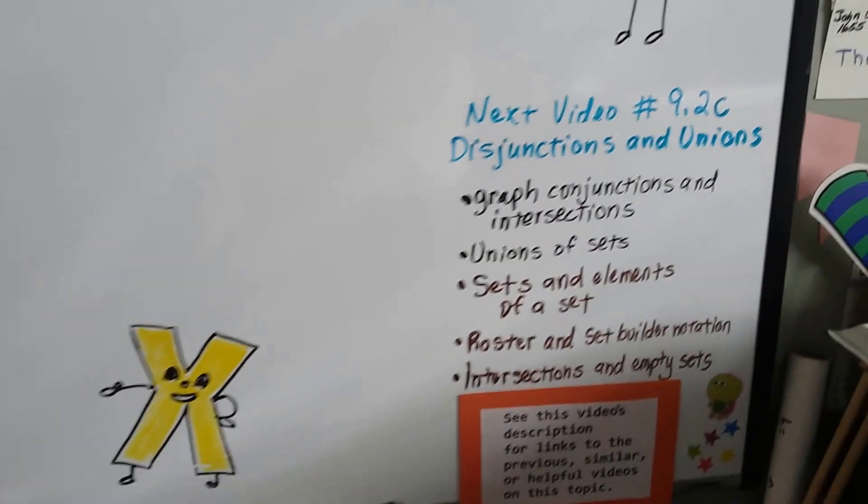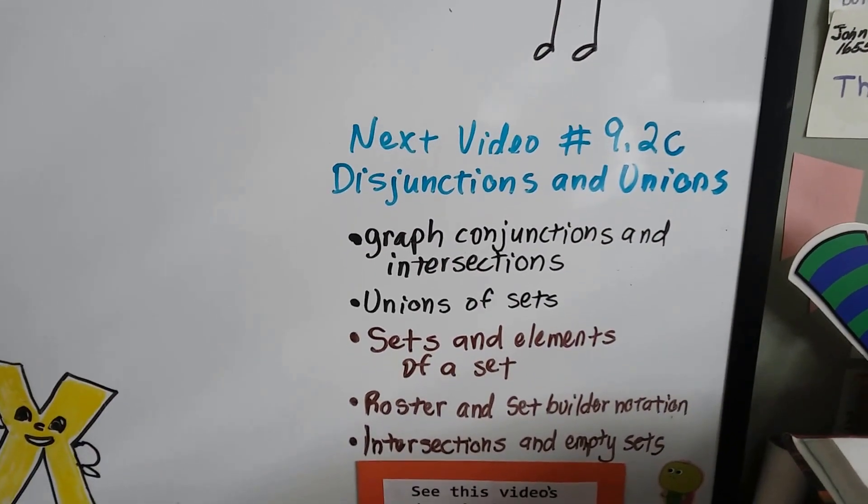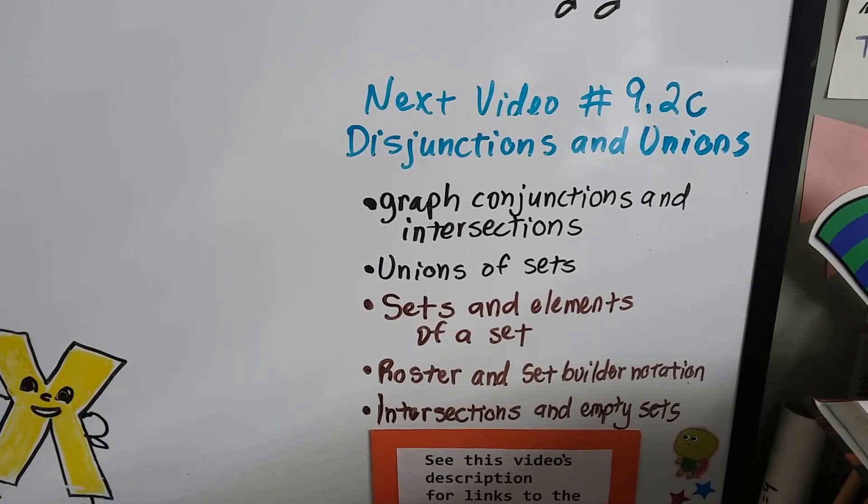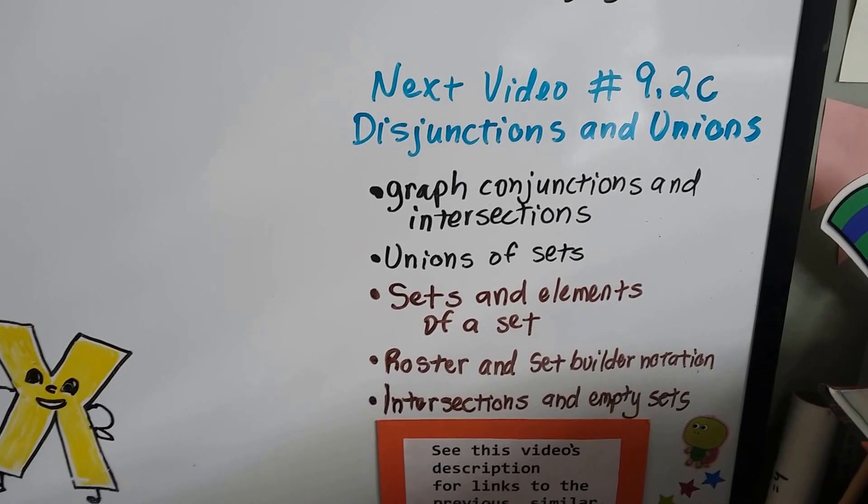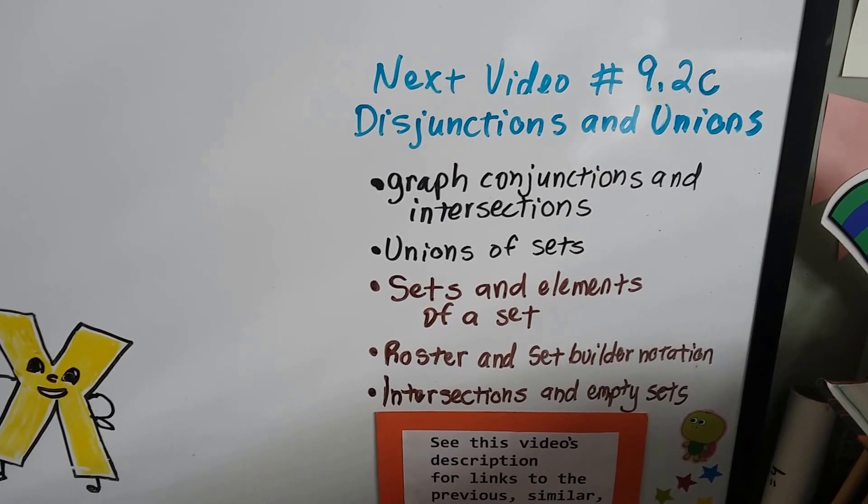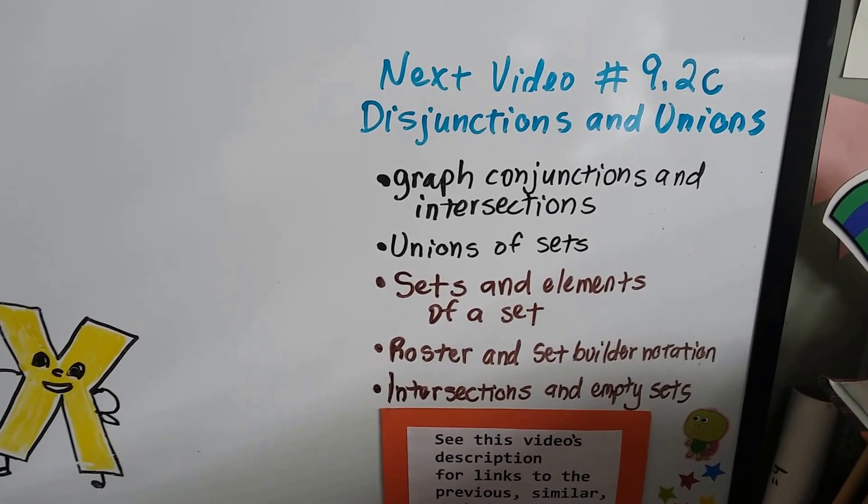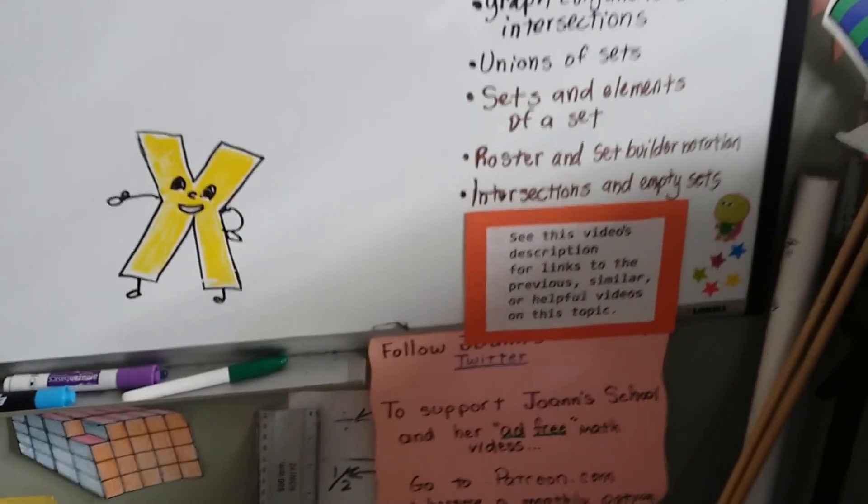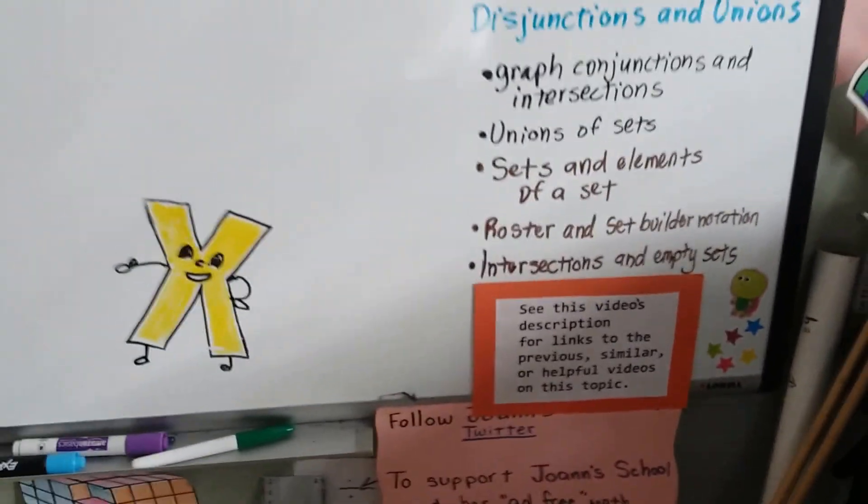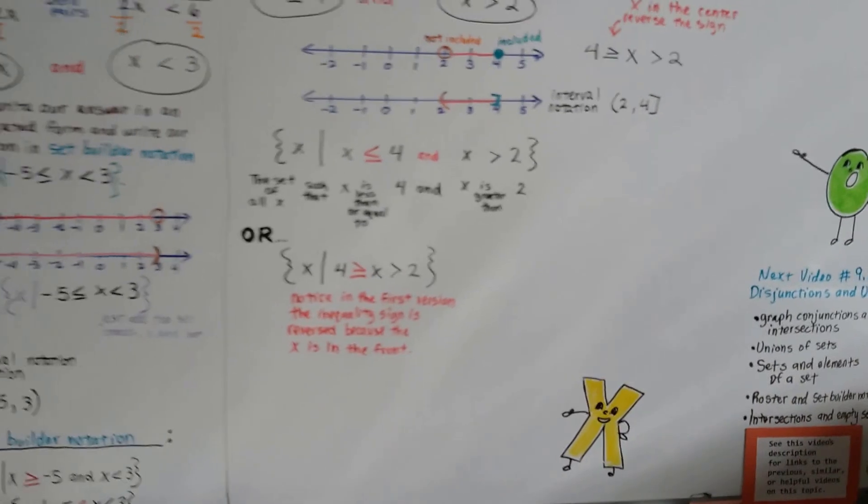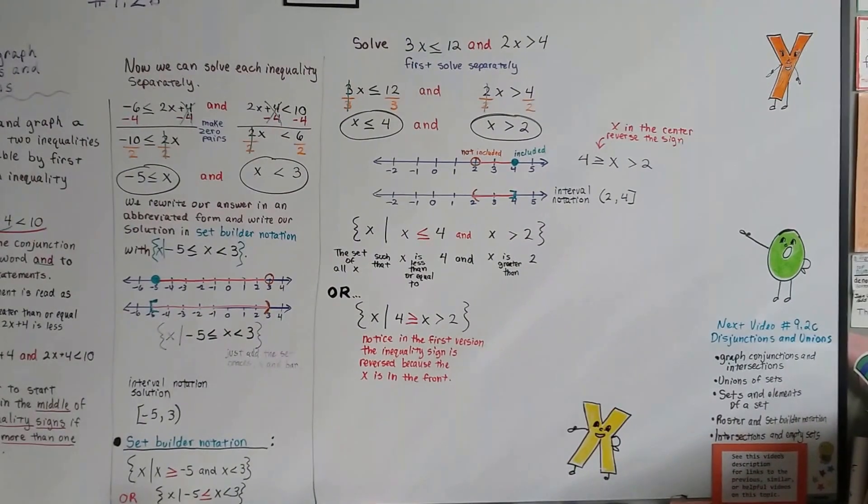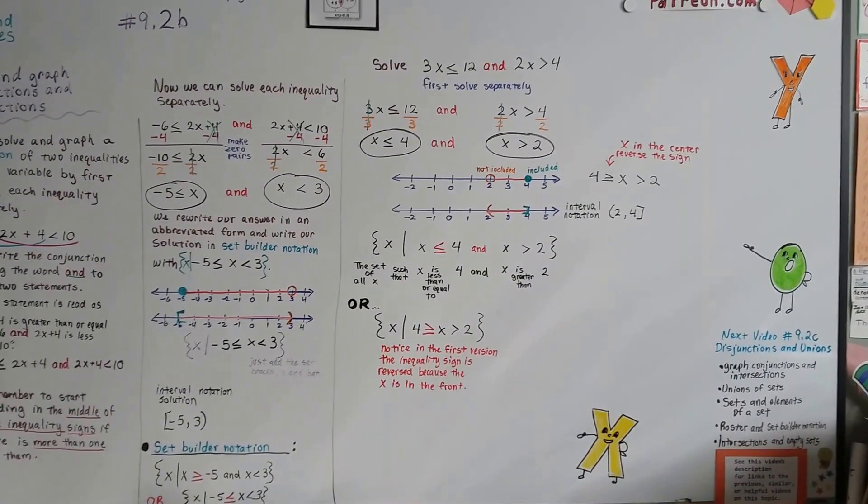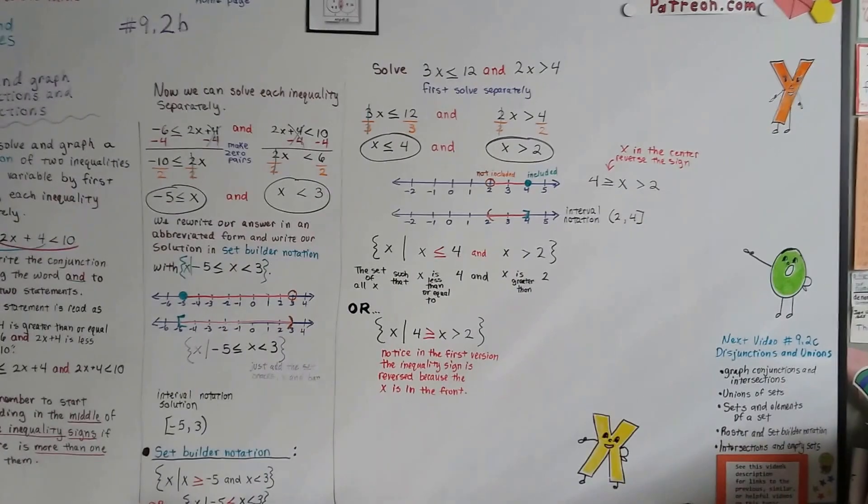Our next video, 9.2c, we're going to talk about disjunctions and unions. If you want to see a video about graphing conjunctions and intersections, that was our first video, 9.2a. Or the union of sets or sets and elements of a set or how to do roster and set builder notation or intersections and empty sets. There'll be links to these videos so you can just click on them in the description of this video. I've been doing that for this algebra 1 playlist. And remember, in my grade 8 math playlist, there's also things about inequalities. So if you want a little extra help, you can browse through the grade 8 math playlist. I'll see you next video.